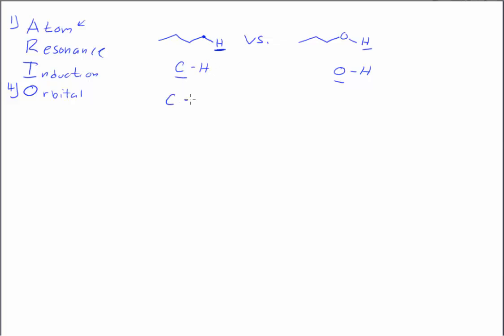C and O are in the same row, so in this case, electronegativity is the answer. O should give us the more acidic hydrogen.